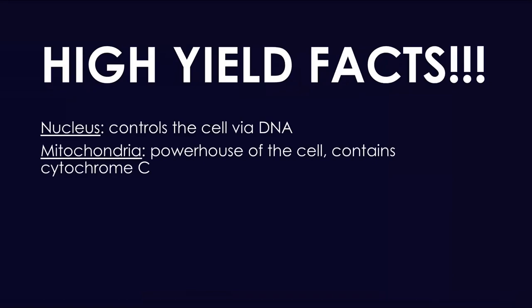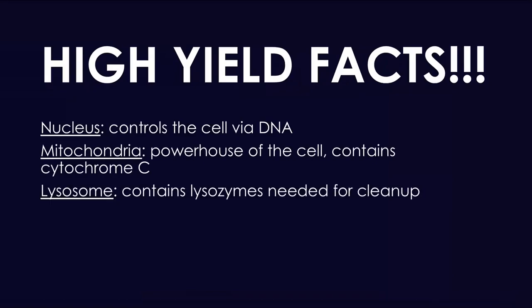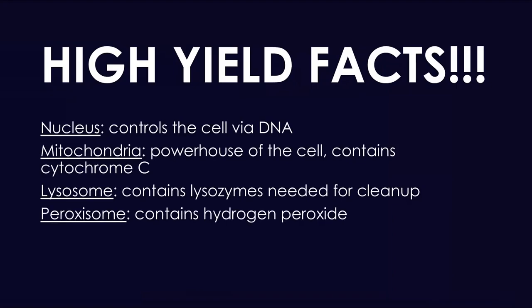Mitochondria is the powerhouse of the cell — that's where ATP is generated, and it contains cytochrome C, which is an apoptotic mechanism in our body that can be released. Then you have lysosomes, which contain enzymes needed for cleanup in our cells.